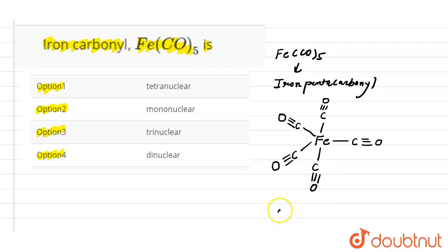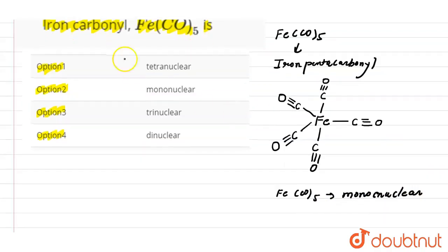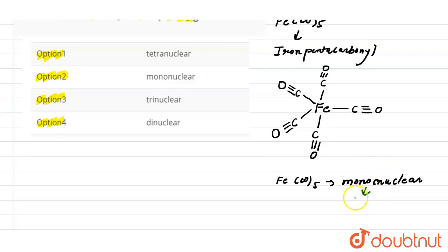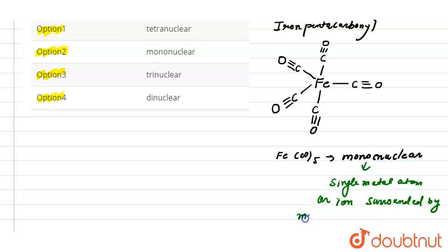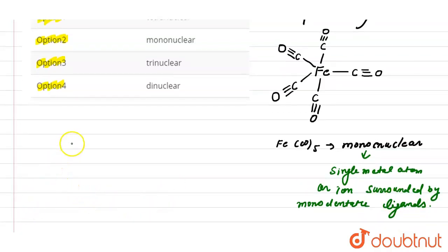Fe(CO)₅ is mononuclear. Mononuclear complexes are the simplest types of coordination compounds that contain a single metal atom. Here, the single iron atom is surrounded by monodentate ligands, which is the carbonyl group — a monodentate ligand.